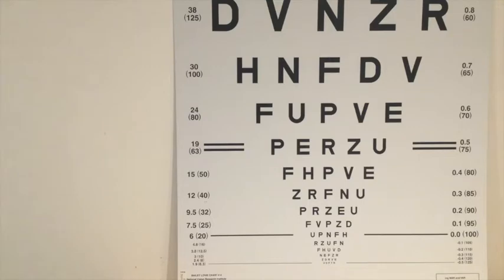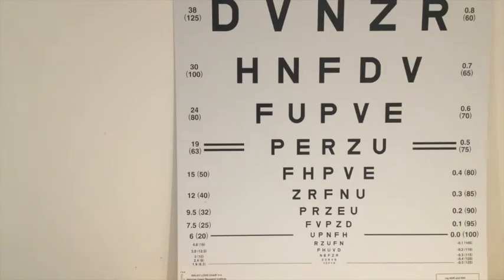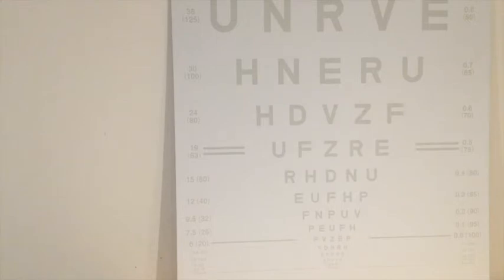On the right hand side you have the value of each line in Logmar. On the left you have the value in metres and in feet in brackets. This part of the assessment will give you an acuity for distance. However, once that assessment has been completed and you turn the test around, you have a very similar assessment but this time in low contrast, and you can then compare the results that you get with high contrast normal versus low contrast.